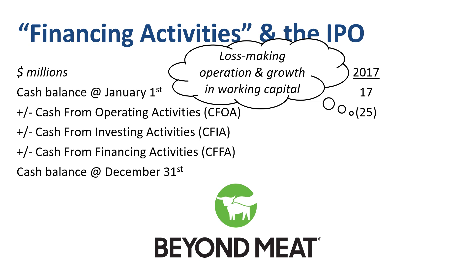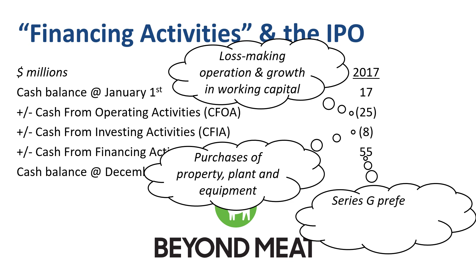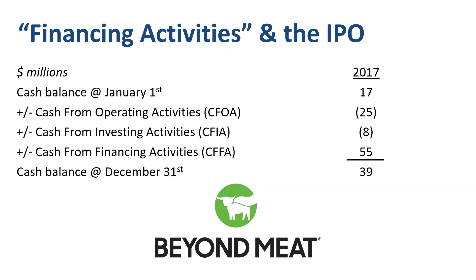Besides having a cash outflow from operating activities, the company also invested in purchases of property, plant, and equipment, for which $8 million of cash outflow was needed. Starting the year with $17 million, and having cash outflows of $25 million and $8 million in the operating and investing categories respectively, they needed to take action on financing. The company generated $55 million in cash inflow from financing activities through a Series G preferred stock offering and issuance of convertible debt, helping them get through 2017 and ending with a cash balance of $39 million.